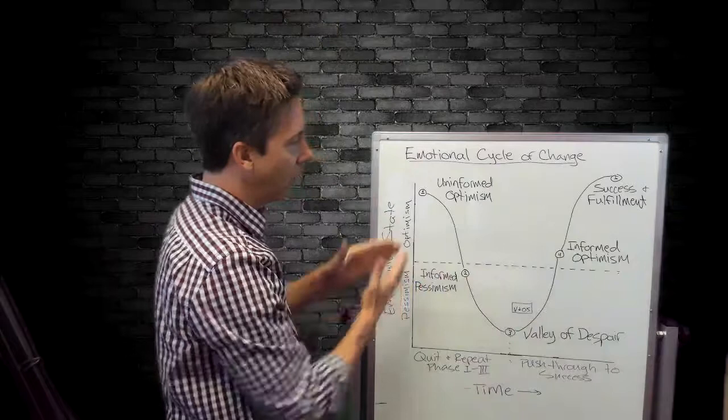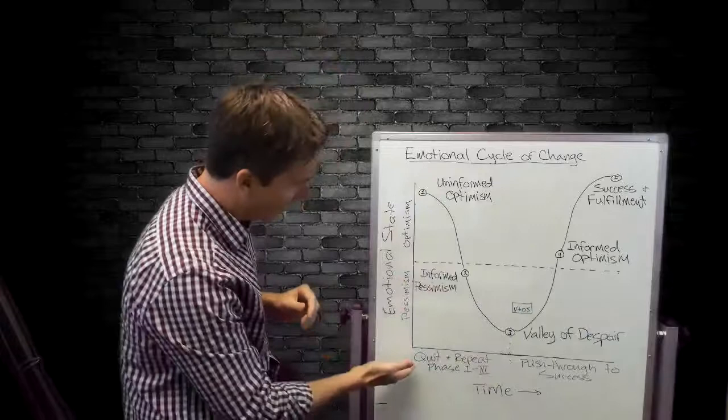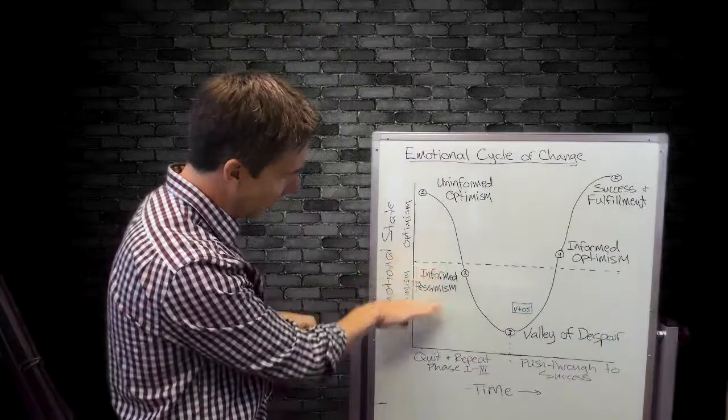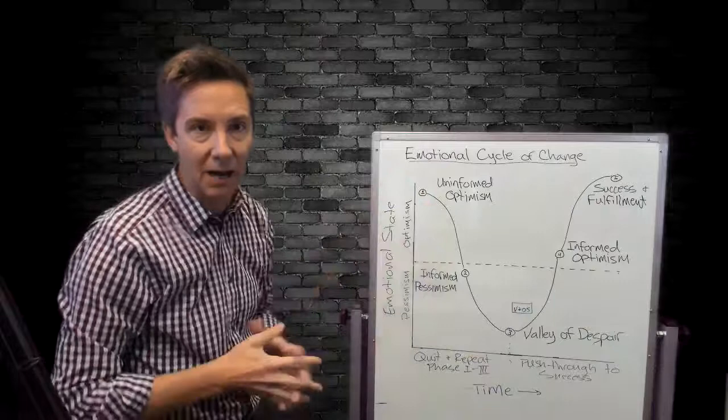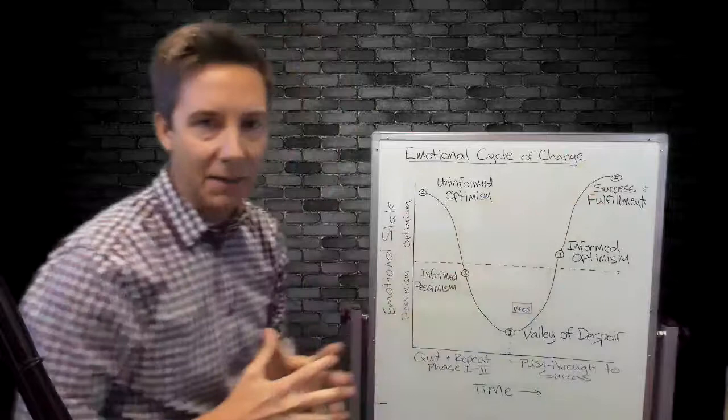It might take a longer period of time that we experience these things, or these changes in emotion might be more pronounced based on the change that we're trying to adopt. So this horizontal axis, again, is emotional state, below this halfway mark is pessimism, and above this halfway mark is optimism. The horizontal axis here is time, and we're just going to walk through these five steps of adopting change and new habits successfully.